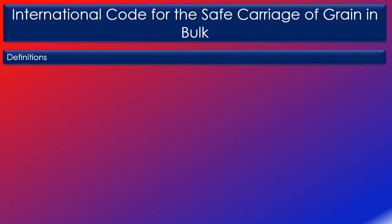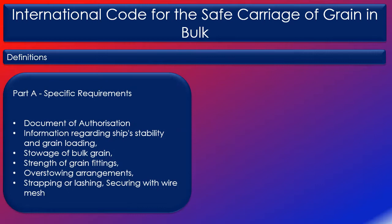The contents of the international grain code are divided into part A and part B. Part A contains specific requirements such as application of document of authorisation, exemptions for certain voyages, information regarding ship stability and grain loading, optional stability requirements for ships without document of authorisation, carrying partial cargoes of bulk grain, stowage of bulk grain, strength of grain fittings, divisions loaded on both sides, divisions loaded on one side only, saucers, bundling of bulk grain, over stowing arrangements, and strapping or lashing and securing with wire mesh.